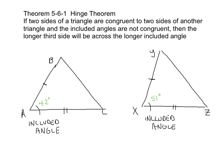So again, we have the situation of two sides being congruent. The included angles are not congruent. 42 is not congruent to 51. Then the longer third side will be across the longer included angle. So I ask, which included angle is bigger? Well, obviously the 51 is bigger. So what this means is that our side YZ, YZ will be bigger than BC. The length of YZ is greater than the length of BC. And this is what this hinge theorem says.